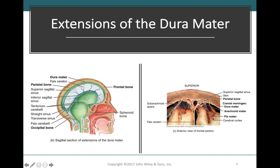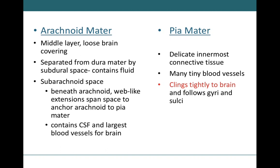We still have the innermost pia mater on the brain's surface, and the arachnoid mater attaches to the pia mater through web-like projections. The overall arrangement of cranial meninges is the same as in the spinal cord, but with dural septa added to keep the brain in place. Although there's no epidural space, we still find the subdural space and the subarachnoid space. The subarachnoid space contains cerebrospinal fluid as well as large blood vessels supplying the brain.